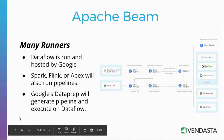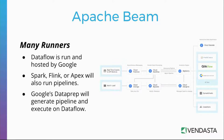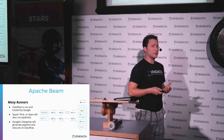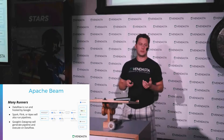In the Apache Beam world, since Google has open sourced it, it can be run in many places. Spark, Flink, and Apex are other choices to run your Apache Beam projects. Dataflow is what's hosted by Google, and you can see a picture of how it fits into the Google infrastructure world.